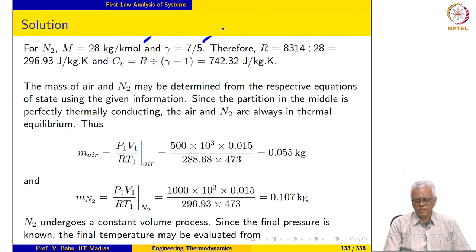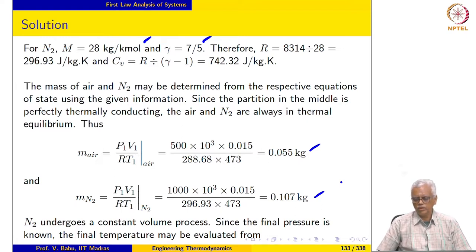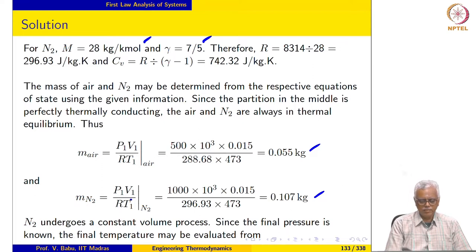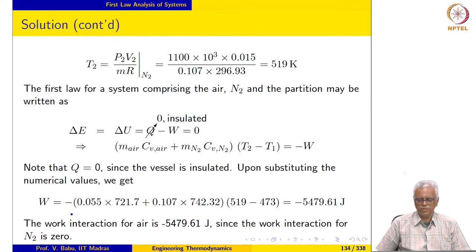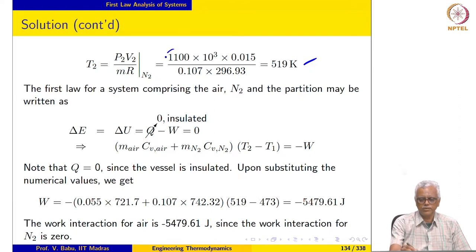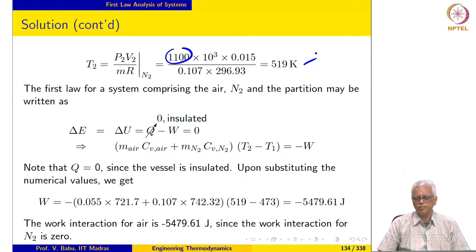Based on the given information, the mass of air may be evaluated from the equation of state to be 0.055 kilogram and the mass of nitrogen to be 0.107 kilogram. As already mentioned, nitrogen undergoes a constant volume process, so we can evaluate the final temperature. Since the final pressure is given and volume is known, we can easily evaluate the final temperature to be 519 Kelvin.